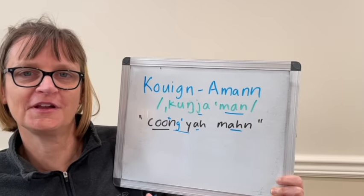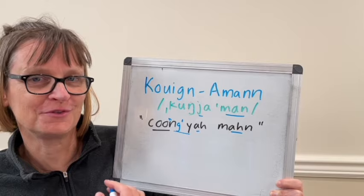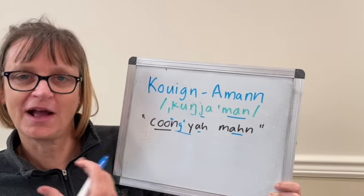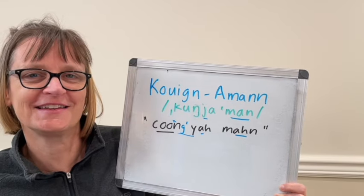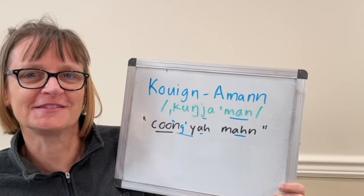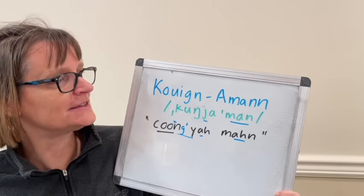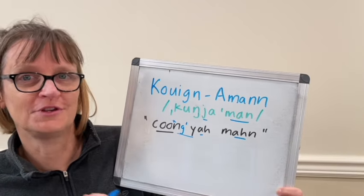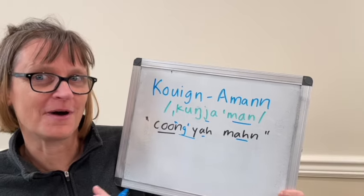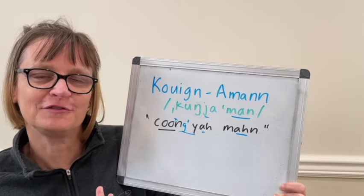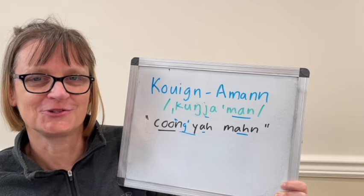So next time you're at the bakery and you want to purchase a kunyaman, practice this a little bit by itself, and then try saying it in some short phrases like, 'I'd like two kunyamans, please,' 'two kunyaman,' 'I really enjoy kunyaman.' That way you'll be fluent and natural when you're trying to use it in everyday speech.